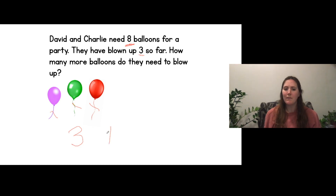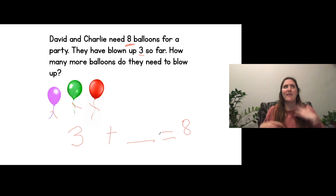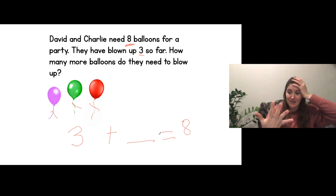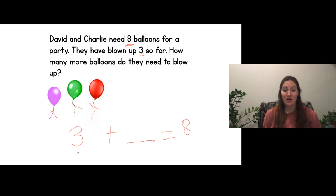So write a three. Three plus what equals how many are they supposed to have altogether? Yeah, eight. So you should write an eight at the end. Three plus what equals eight. So how many more balloons do they need to blow up? They've already blown up three. Let's count on until we get to eight, starting at three: three, four, five, six, seven, eight. I think I know. Let's draw the circles — we can use that strategy too. So we already know three, count on: four, five, six, seven, eight.